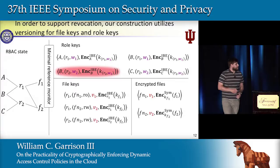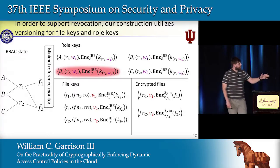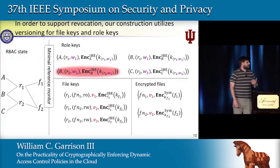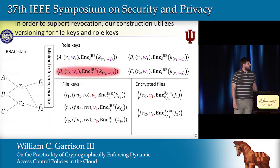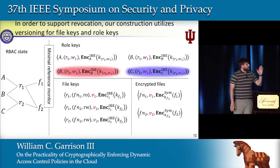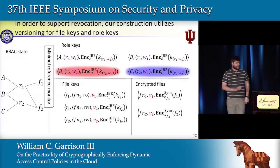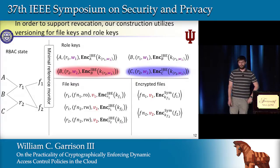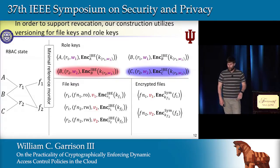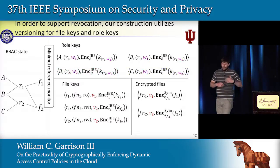For instance, if I'm removing B from R2, again this is the tuple I'd like to delete, but I can't simply delete it because B could be caching the keys. I'll re-upload another version of this role identity private key encrypted to the identity C, the only user who still has access to this role.